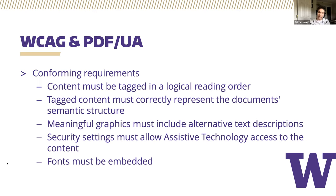Conforming requirements for WCAG and PDF UA include: the content of a PDF document must be tagged in a logical reading order; the tagged content must correctly represent the document's semantic structure; meaningful graphics must include alternative text descriptions; security settings must allow assistive technology access to the content; and fonts must be embedded. The only real way to tell if a PDF document is PDF UA compliant is to run an accessibility report with a third-party application called PAC3, which is freely available for download, but only on the Windows platform. It provides a report about accessibility and lists any errors, but doesn't give the author the ability to correct those errors — that must be accomplished by a PDF remediation software such as Adobe Acrobat Pro.